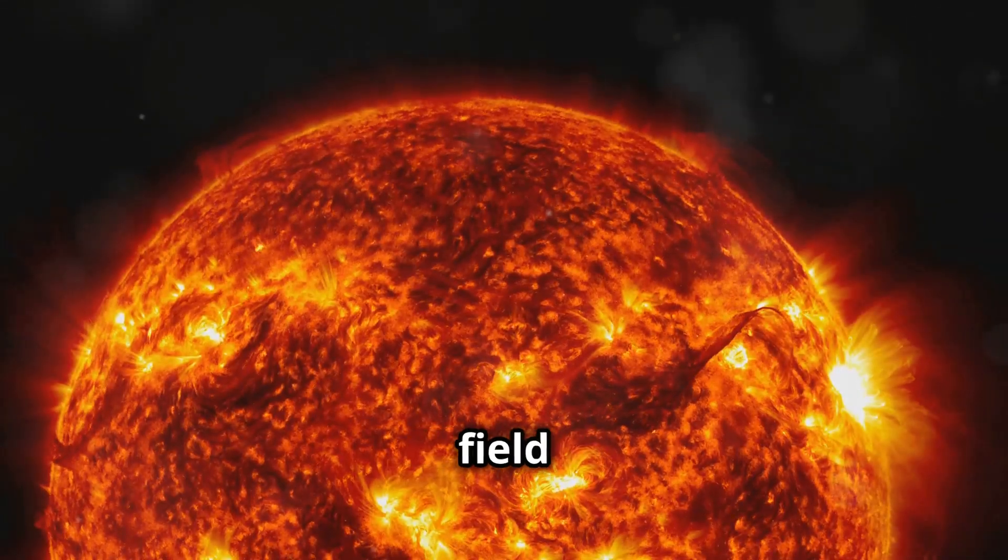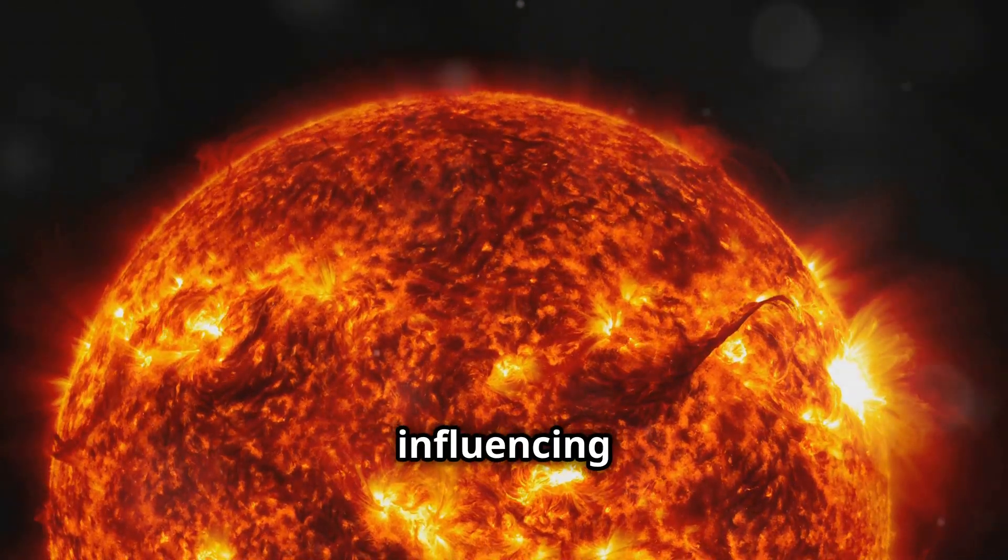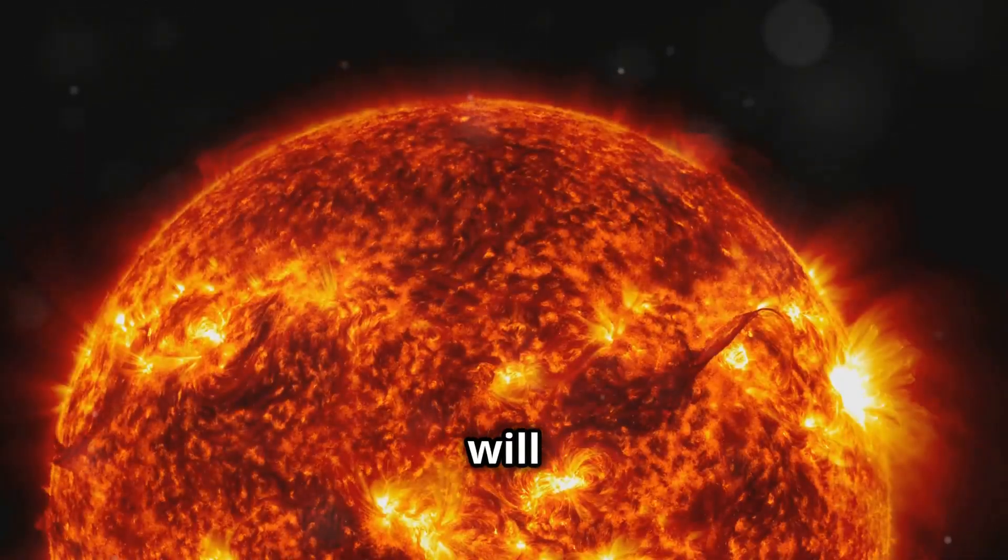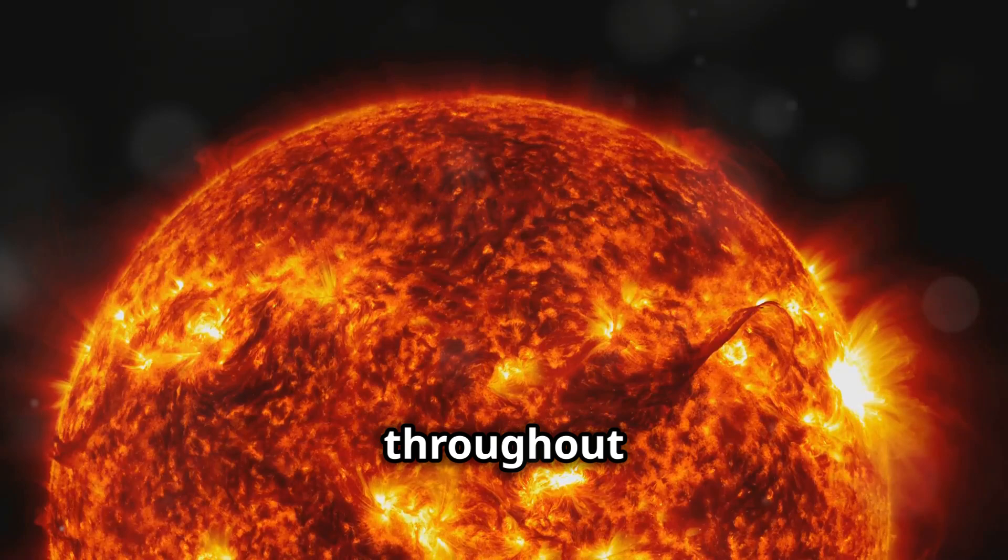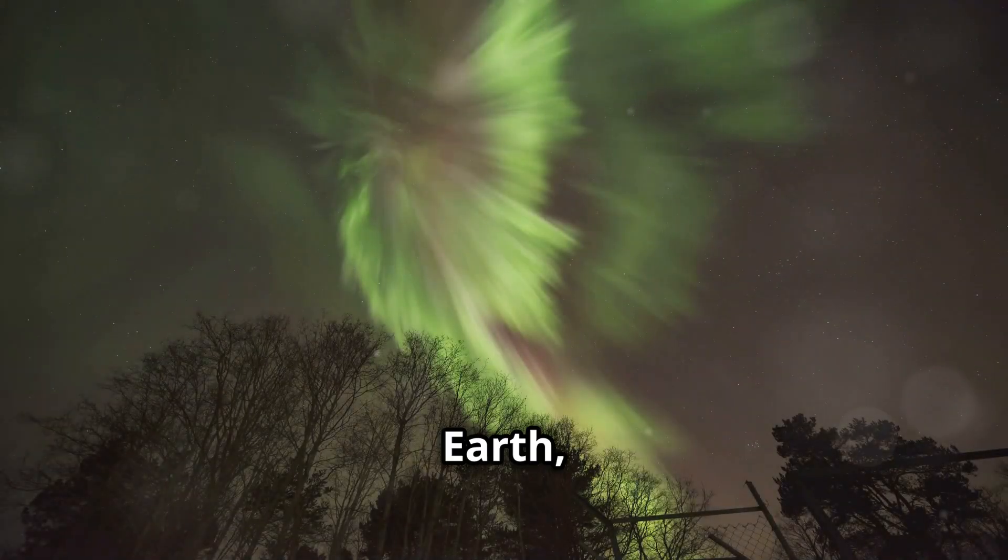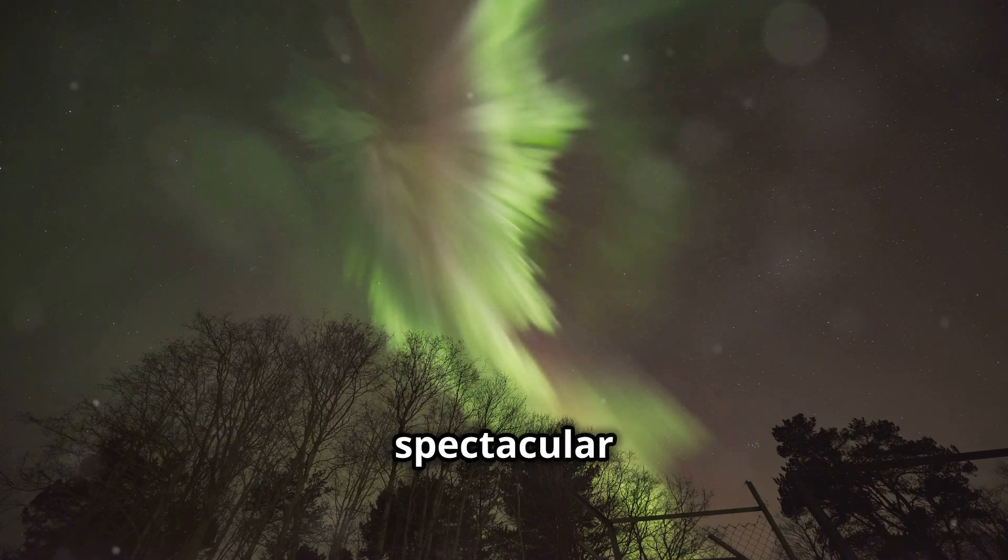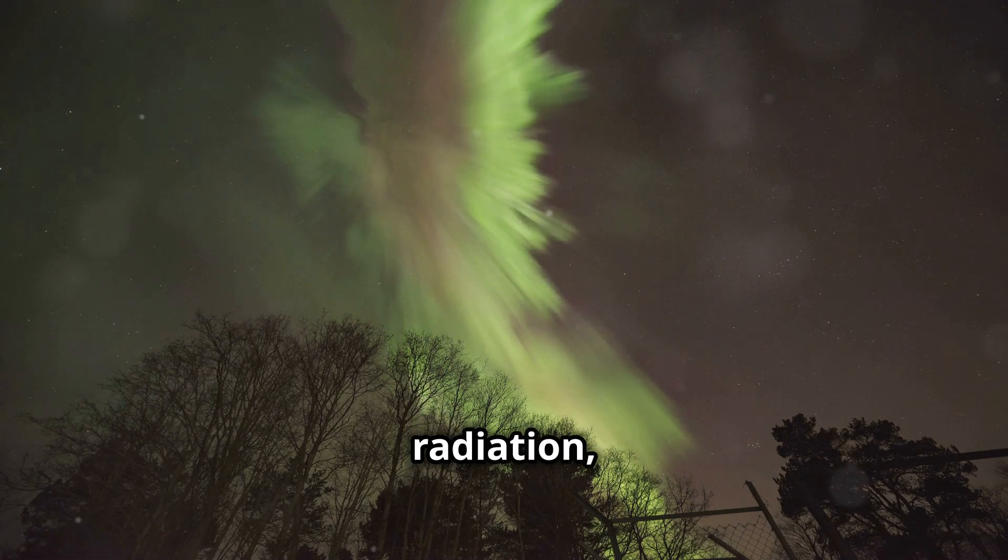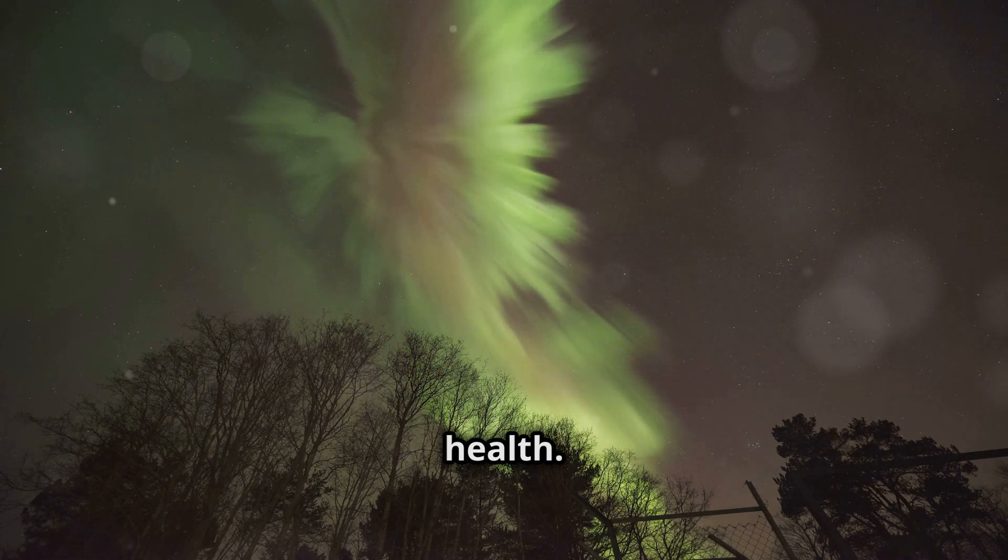The sun's magnetic field will become more chaotic and unpredictable, influencing space weather. Solar wind will intensify, impacting space weather throughout the solar system, affecting satellites and spacecraft. On Earth, we will witness spectacular auroras, but also face increased radiation, posing risks to technology and health.